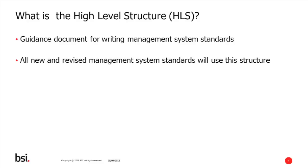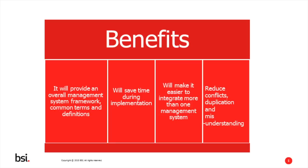This high-level structure has common terms and definitions, with a core set of requirements, and will be applied to all new and revised management system standards. For management system implementers, this will provide an overall management system framework, so you can then add specific discipline standards into those requirements. The benefits include: before a standard is even issued, you will have an understanding of the core elements; it will save time and make it easier to implement; and remove any conflicts, duplication, and confusion from different management system standards. In future, all ISO management system standards should be consistent and compatible.